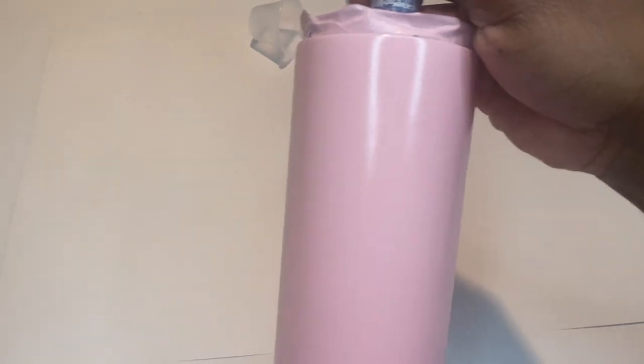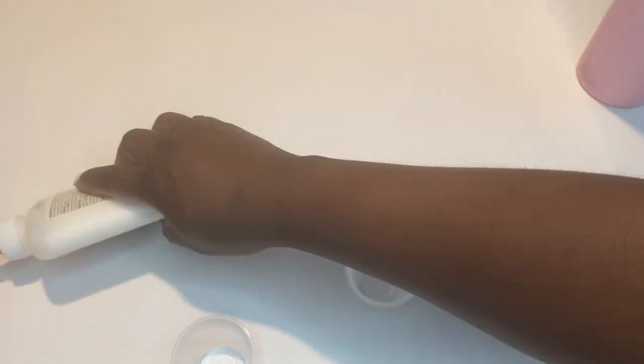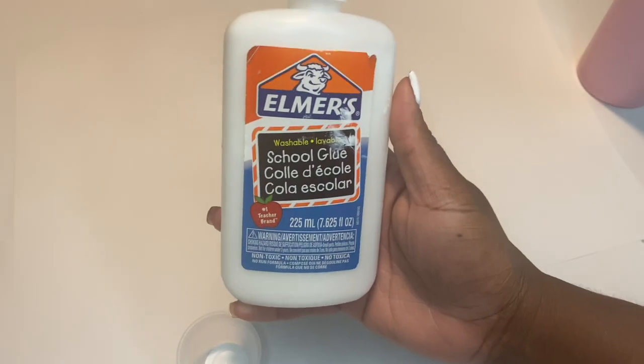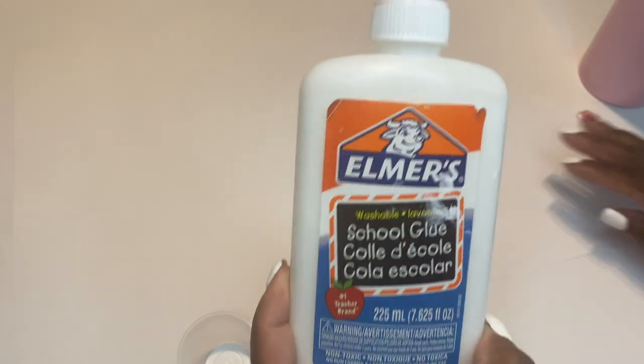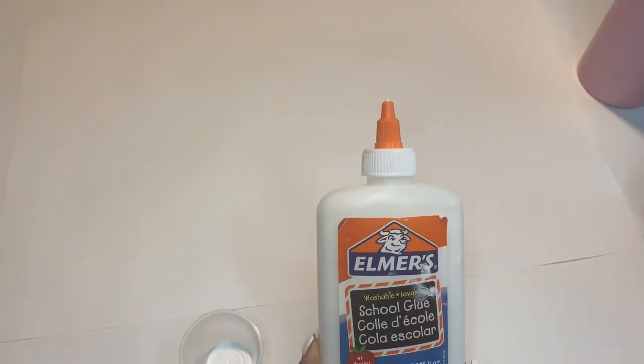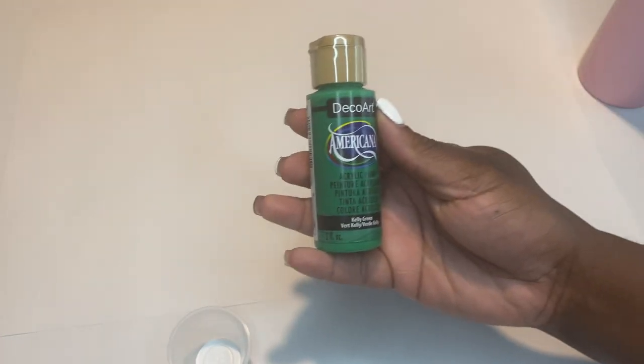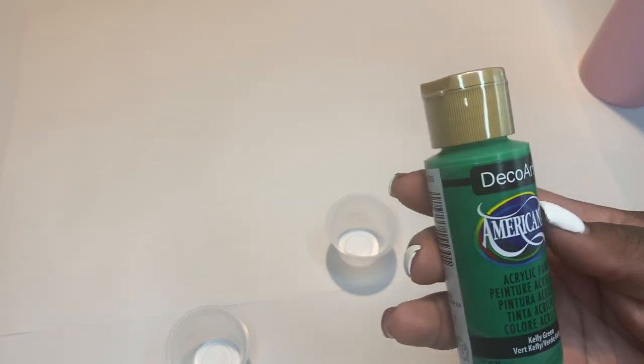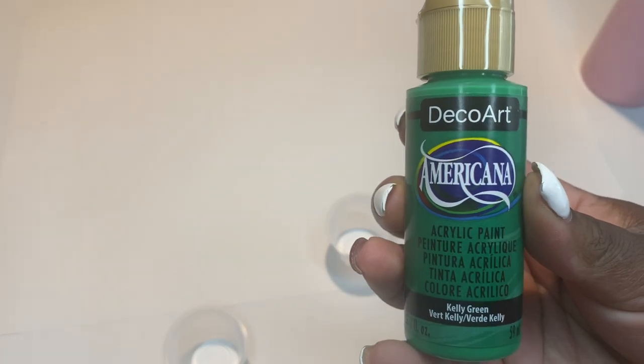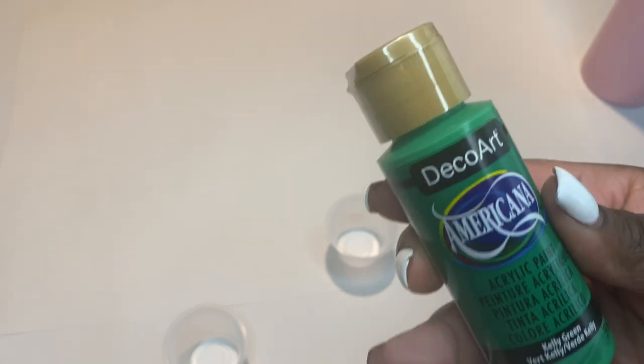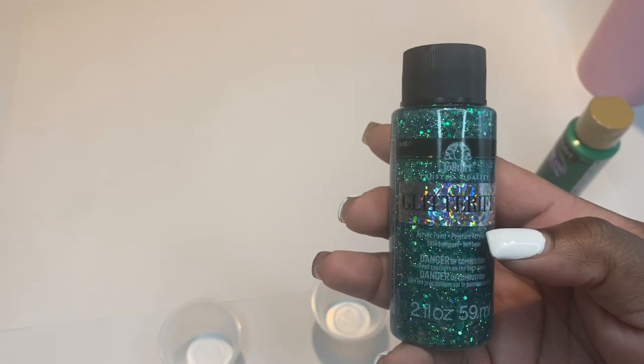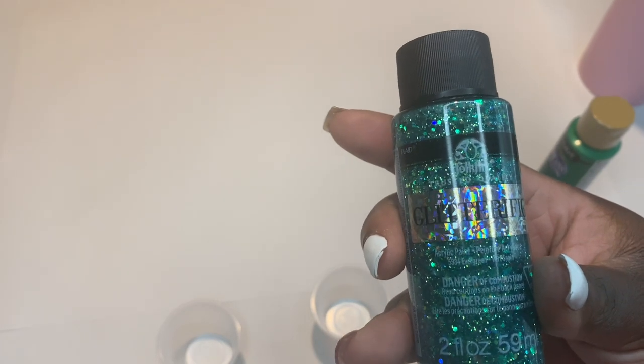The things you are going to need is obviously your tumbler, some medicine cups, Elmer's glue here - this is your normal Elmer's school glue. You can get this from either Walmart or Amazon, whichever you prefer. I also have this acrylic paint here called Kelly Green from Michaels, and the other color I'm going to use is a glitter acrylic paint called Evergreen.